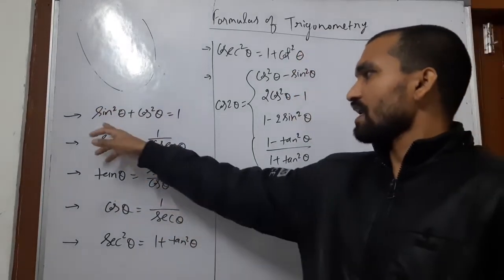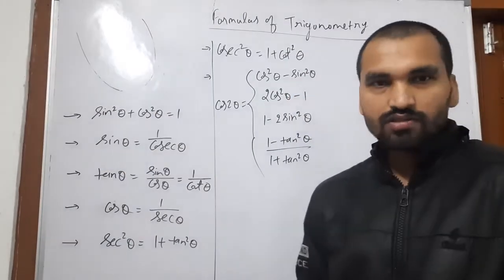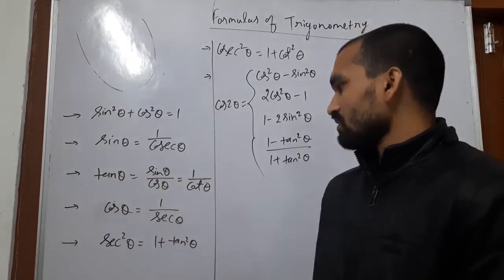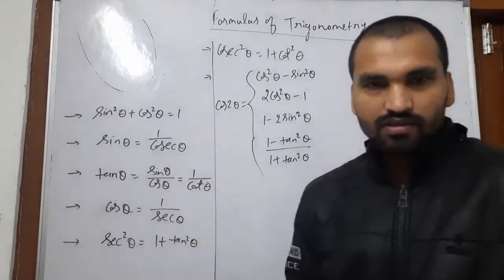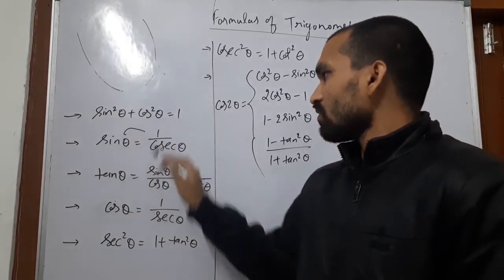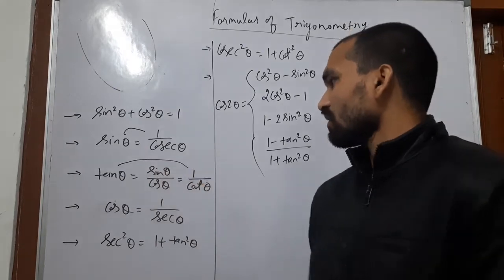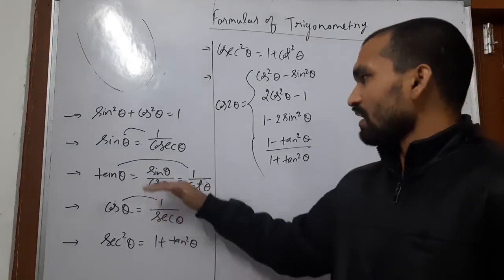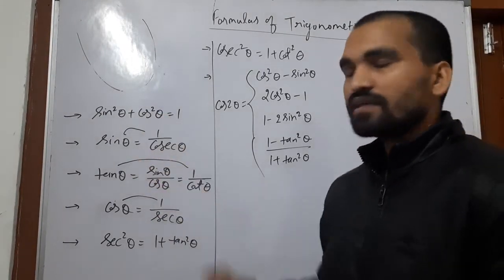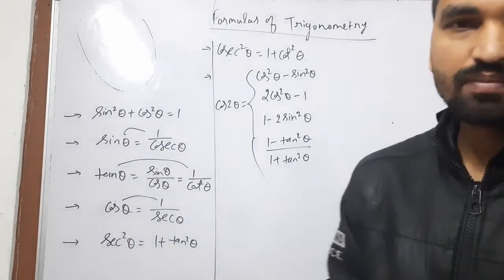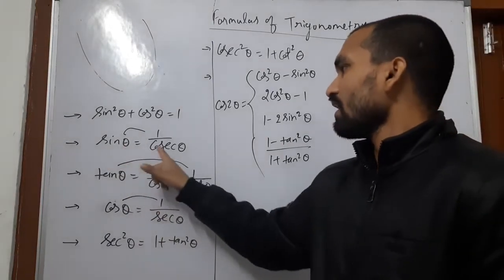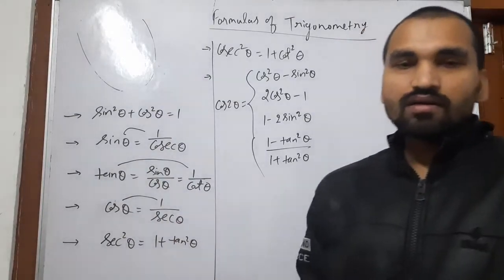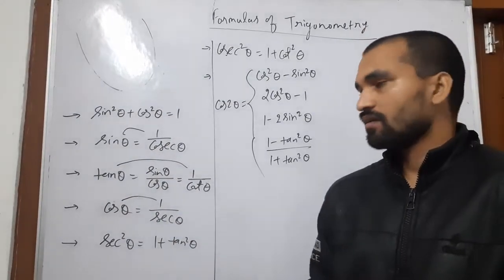The second one is sec theta equal to 1 by cos theta. And tan theta is equal to sin theta upon cos theta. These three properties are known as reciprocal properties because sin theta and cosec theta, tan theta and cot theta, cos theta and sec theta are reciprocal of each other.